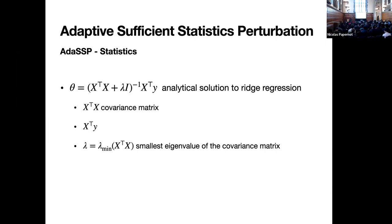ADSP is called adaptive sufficient statistic perturbation. For ridge regression with regularization, the analytical solution involves the inverse of the covariance matrix with regularization, multiplied by the cross term. The regularization is determined by the smallest eigenvalue of the covariance matrix. That's why the approach is called adaptive — the adaptivity comes from using the smallest eigenvalue of the covariance matrix as the regularization term.